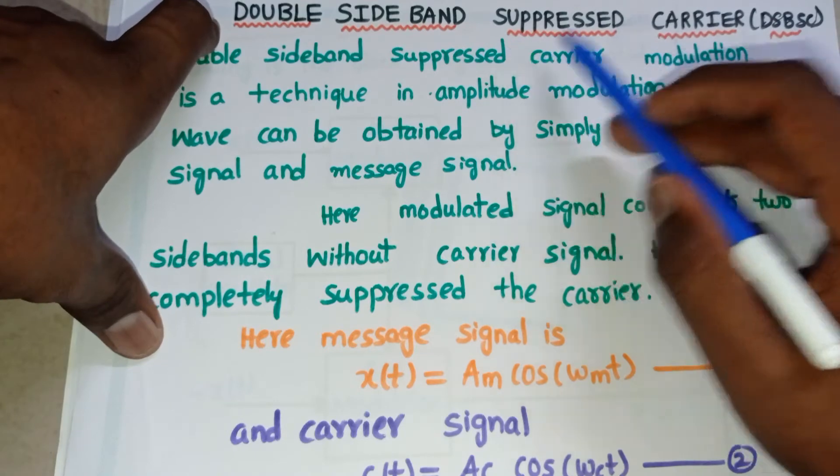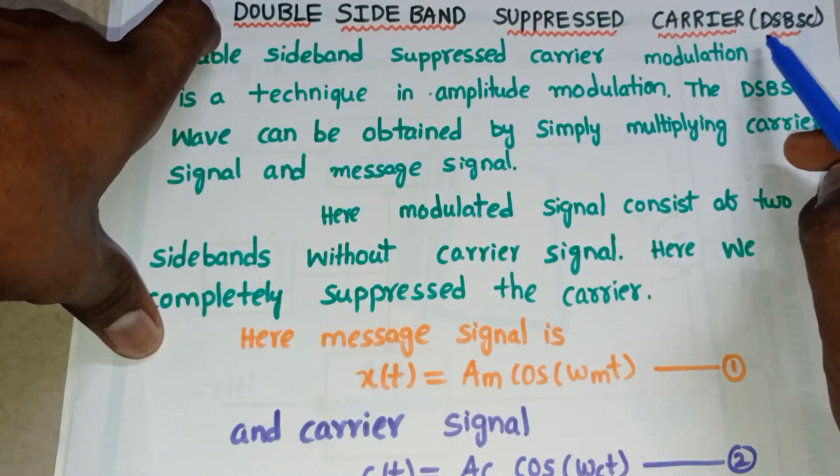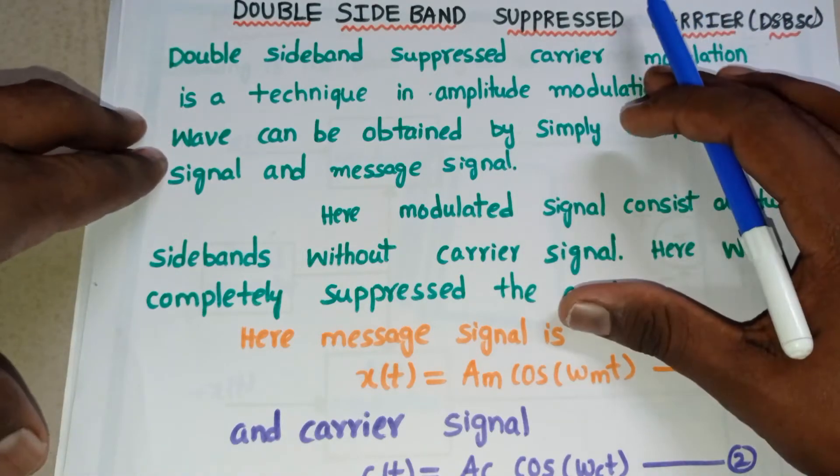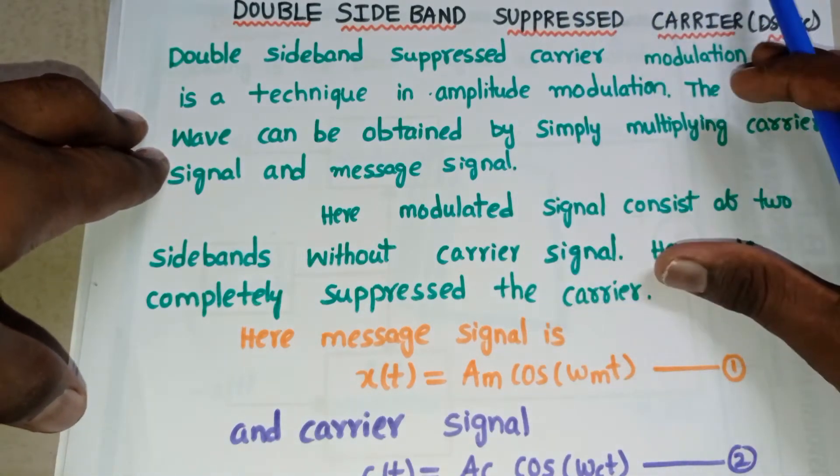It is shortly called as DSBSC, means Double Sideband Suppressed Carrier. Let's first see what is Double Sideband Suppressed Carrier.